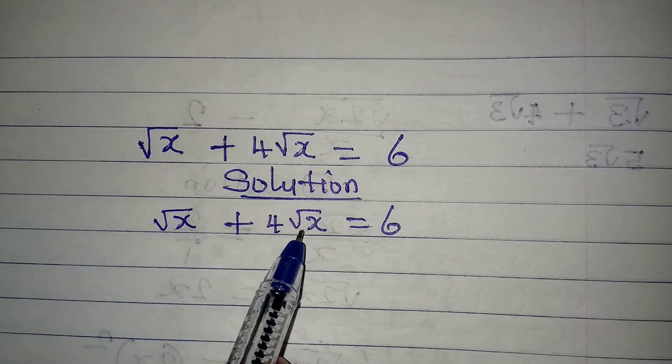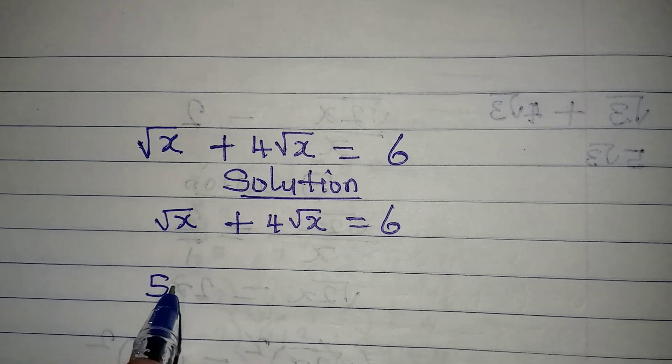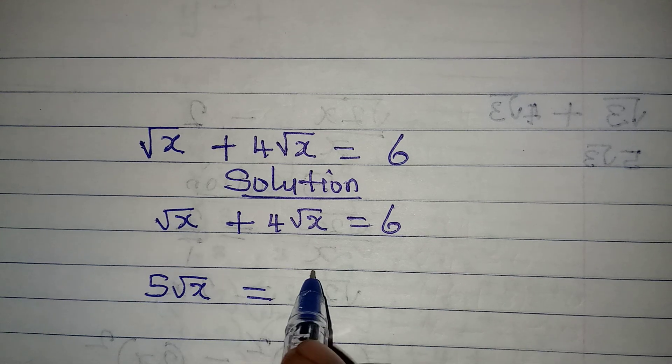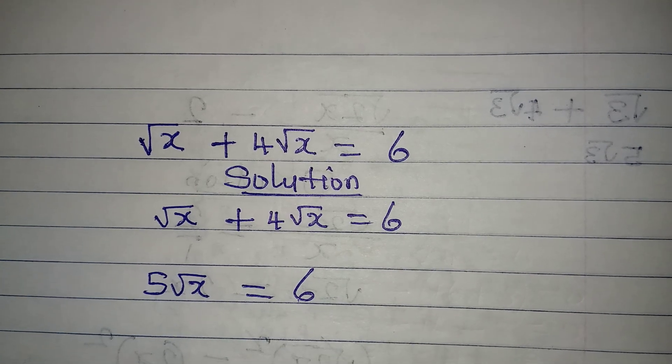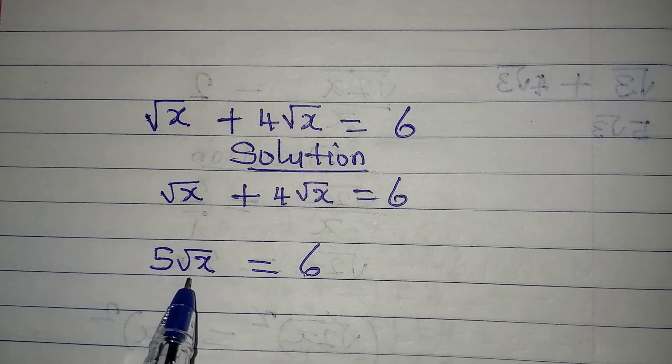Square root of x plus four square root of x is going to give us five square root of x, and this is equal to six. Now what do we do from here? We need to make root x the subject first.